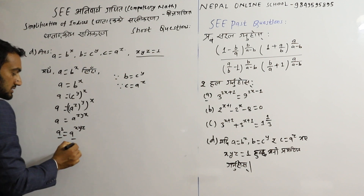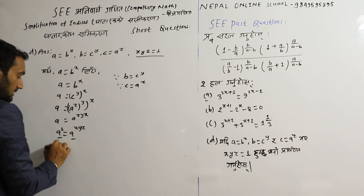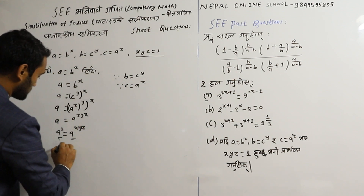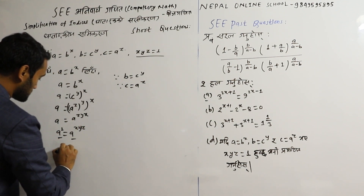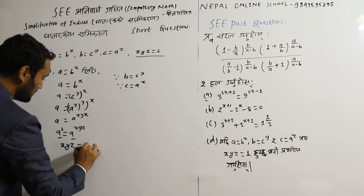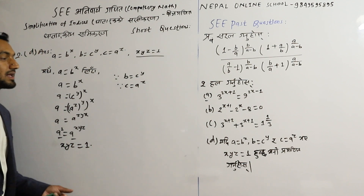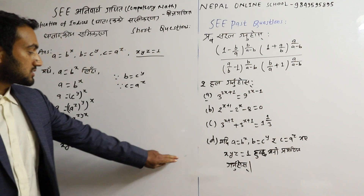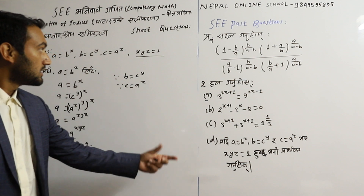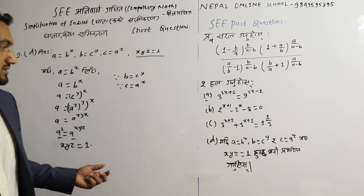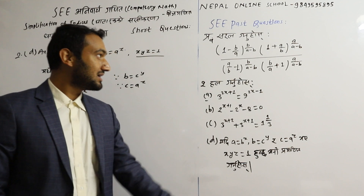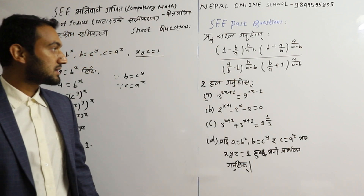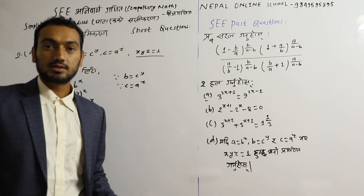So x y z equal to 1. This pattern is to practice simplification. If you have to practice simplification, solve these questions.